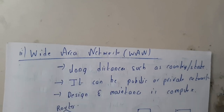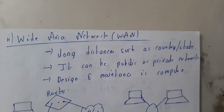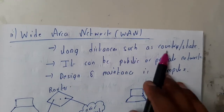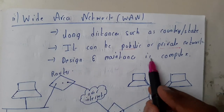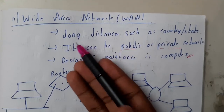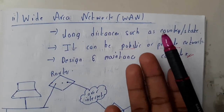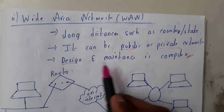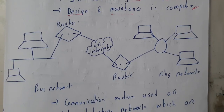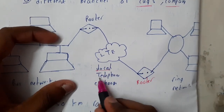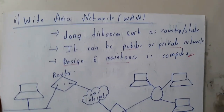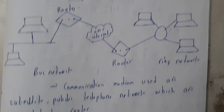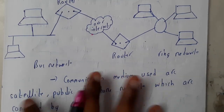Now let us go through Wide Area Network. 'Wide area' means it has its maximum extent. It covers long distances such as countries and states, and can be either public or private. Designing and maintenance is really complex — connecting the whole world or whole countries to each other is a complex task. The circuit connects over the internet, through local telephone exchanges locally, and via worldwide internet infrastructure. Communication mediums used include satellites and public telephone networks.